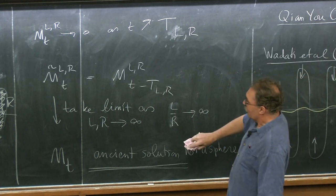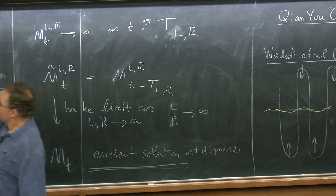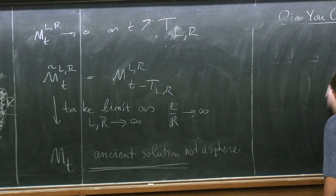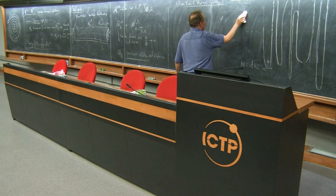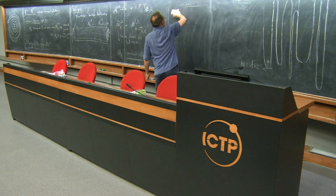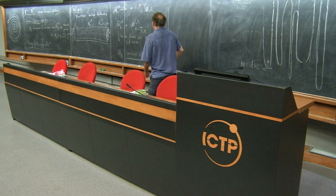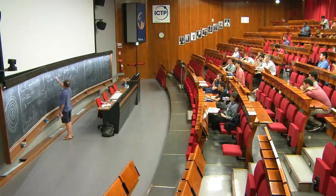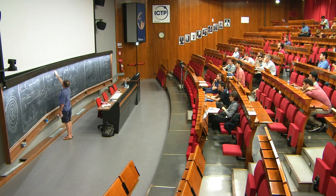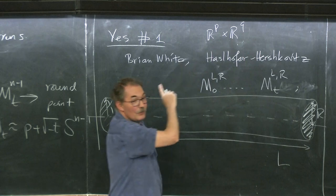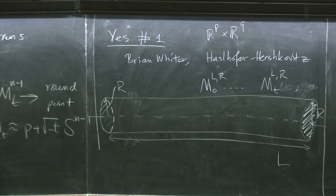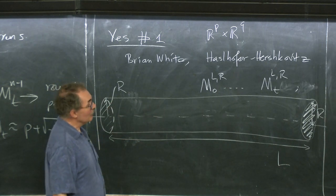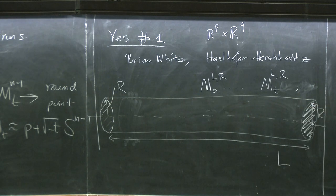Hasselhofer and Hershkowitz later did the same construction with more details of what the solution looks like. Their construction is in ℝᵖ × ℝᵠ with the same kind of symmetry, producing surfaces that are not spherical and are convex ancient solutions of that type. So now you can ask a more detailed question: what is the asymptotic shape of these surfaces as t goes to minus infinity?